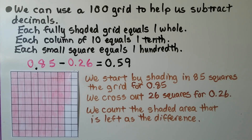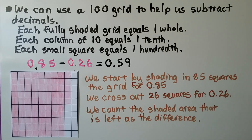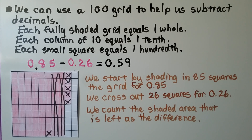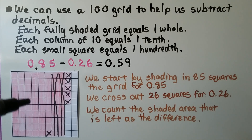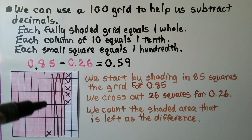We have 85 hundredths minus 26 hundredths. We start by shading in 85 squares on the grid for 85 hundredths. Then we cross out 26 squares for 26 hundredths. We count the shaded area that is left as the difference. We have 5 tenths and 9 hundredths — 59 hundredths.